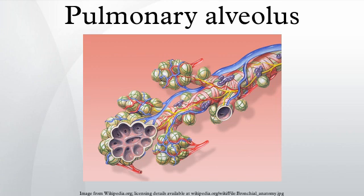Reinflation of the alveoli following exhalation is made easier by pulmonary surfactant, which is a phospholipid and protein mixture that reduces surface tension in the thin fluid coating. The fluid coating is produced by the body in order to facilitate the transfer of gases between blood and alveolar air. The surfactant is produced by great alveolar cells, which are the most numerous cells in the alveoli, yet do not cover as much surface area as the squamous alveolar cells.